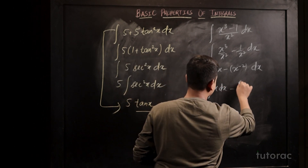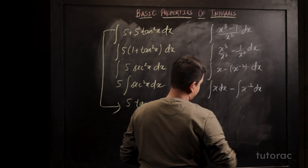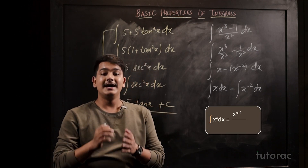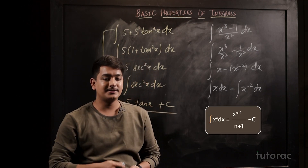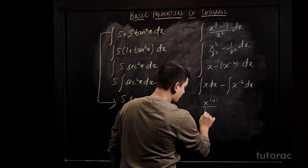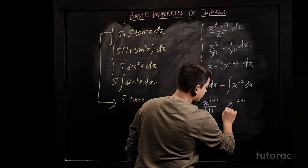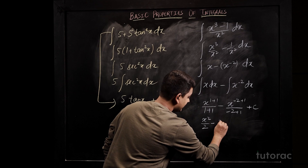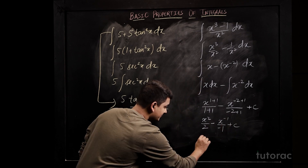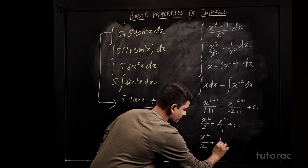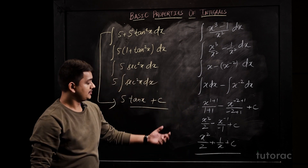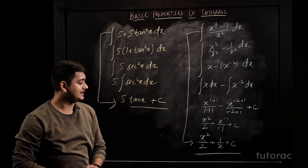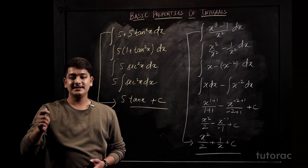So it will be the integral of x dx minus the integral of x⁻² dx. Here we have x¹ and x⁻². Using the power rule, integral of xⁿ = x^(n+1)/(n+1), we get x²/2 minus x⁻¹ + c, which gives us x²/2 + 1/x + c. This is the integral for (x³ - 1)/x².